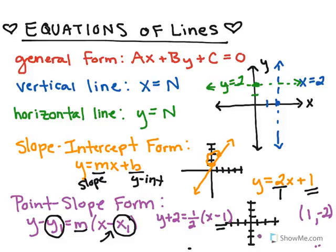1 negative 2 would be right there. And now I'm going to find my slope, which is 1 half, and I'm going to use that from this point to get my next point. So that means I go up 1 and over 2. So there's my second point, and I connect them together, and there's my line.